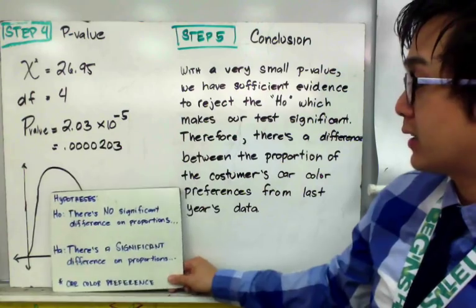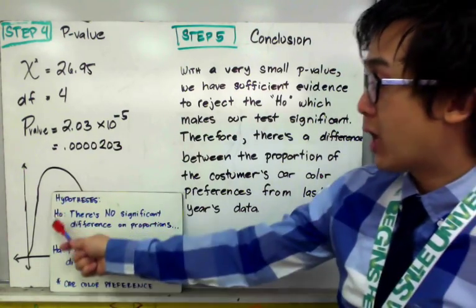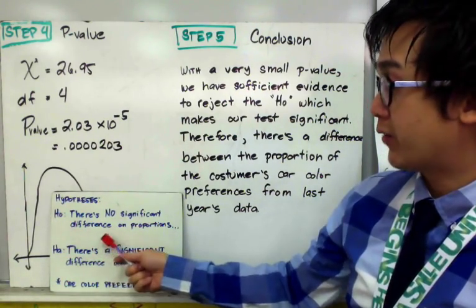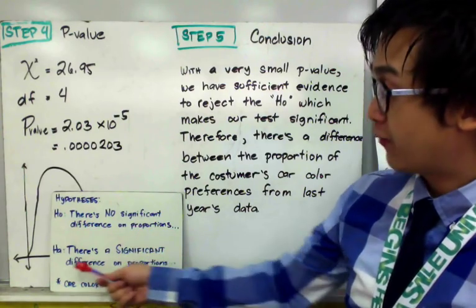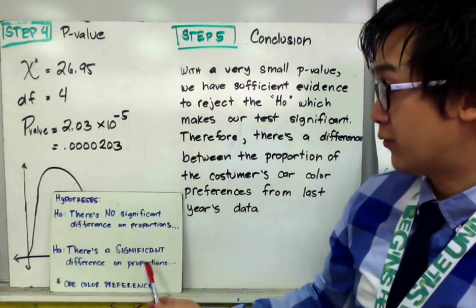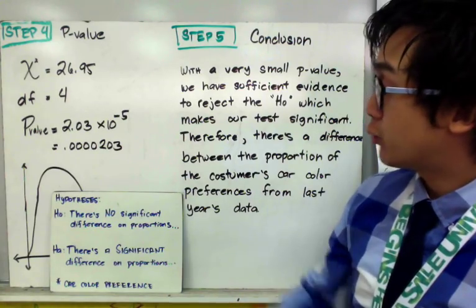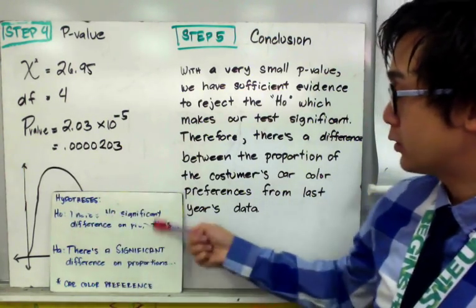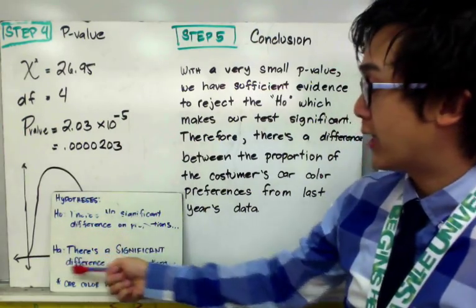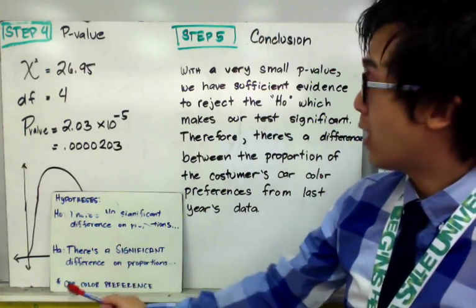Now for our hypotheses, the null hypothesis is that there's no significant difference in the proportions. And for the alternative, there's a significant difference in proportions for car color preferences. Since we rejected the null hypothesis, we are now in favor of the alternative hypothesis.